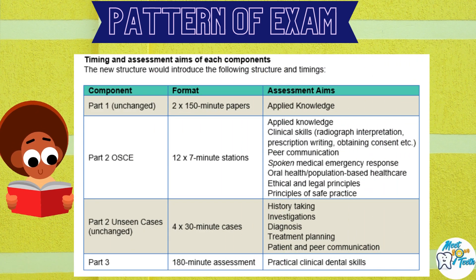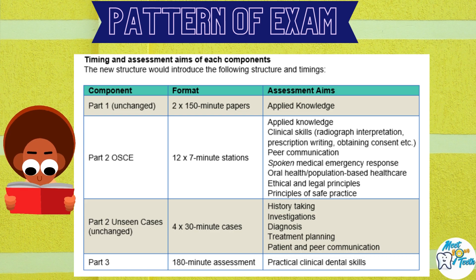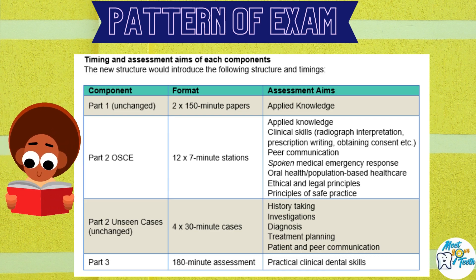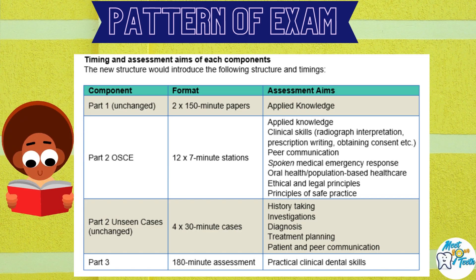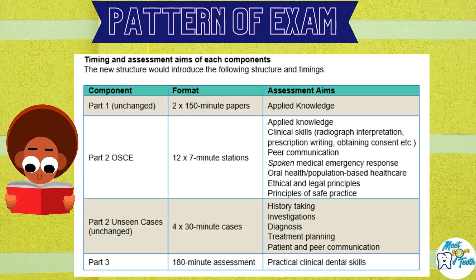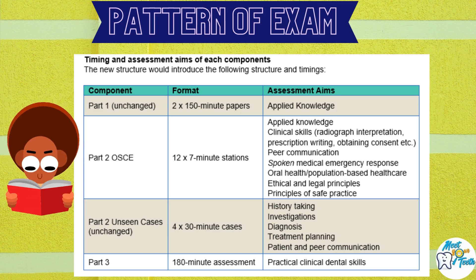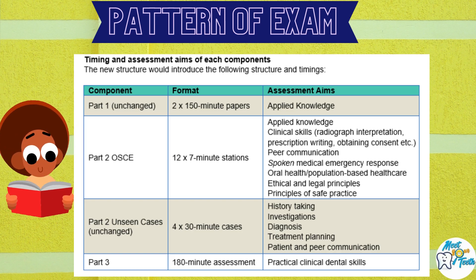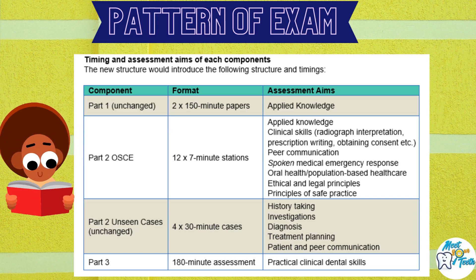This is a screenshot from the RCS website which briefly explains the pattern of the exam. Part 1 assesses your applied knowledge. In OSCEs, this applied knowledge is tested through clinical skills such as radiographic interpretation, prescription writing, obtaining consent, communication skills, response to medical emergencies, oral health care, and ethics and legal principles. In the unseen cases, the focus is on history-taking, investigations, arriving at a diagnosis, formulating a treatment plan, and communication skills.